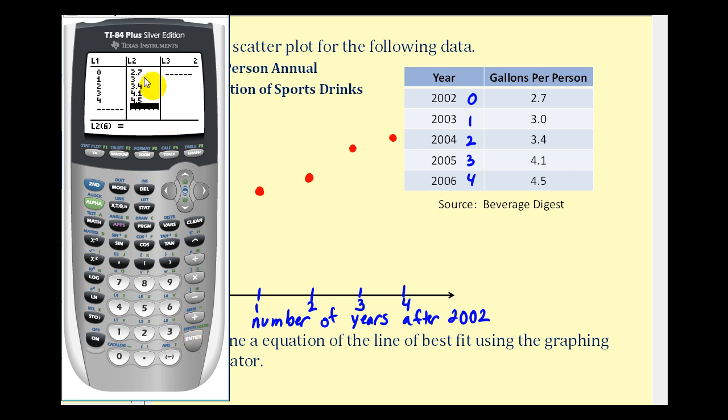Now that we have our data in, let's go ahead and adjust the window, so that when we create our scatter plot, the points will show. So we'll press window. Remember our x-axis went from zero to four, but I'm going to extend that, so I'm going to go from negative one to five on the x-axis. For the x scale, that's how often you want a tick mark, let's enter one here. And if the y-axis went from zero to five, let's go ahead and go from negative one to six, and we'll scale it by ones.